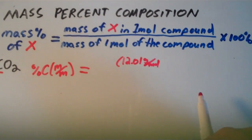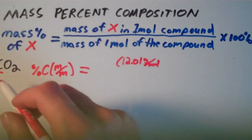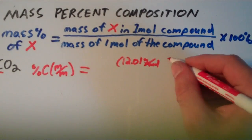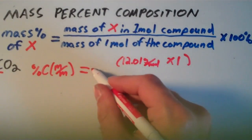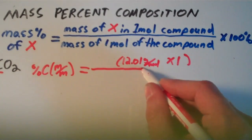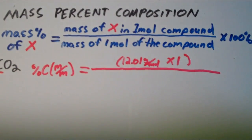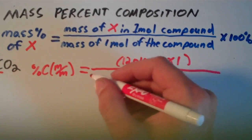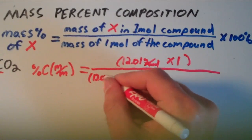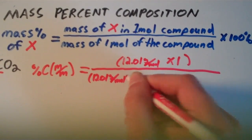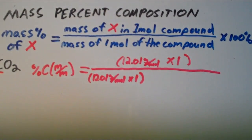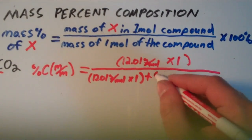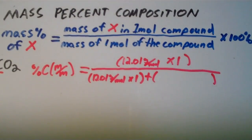Taking into account how many carbon atoms there are — there's only one carbon atom in CO2 — so we multiply by one. That gives us our numerator. For the denominator, we still have 12.01 grams per mole times one from the carbon, but now we also have to add the mass of oxygen that is in one mole of CO2.